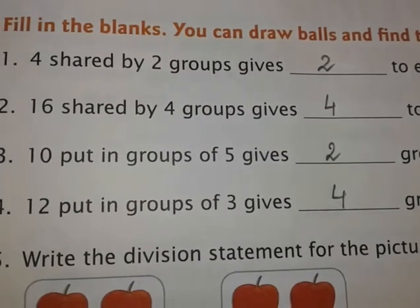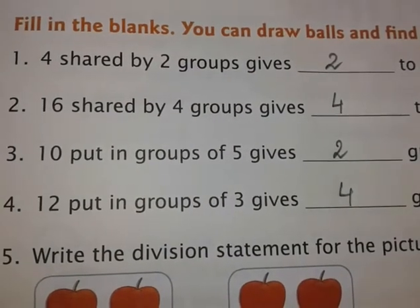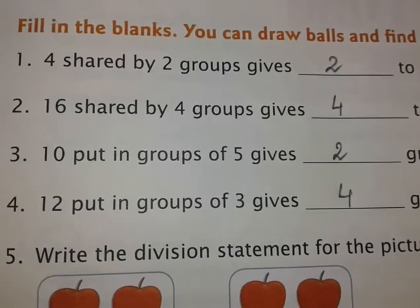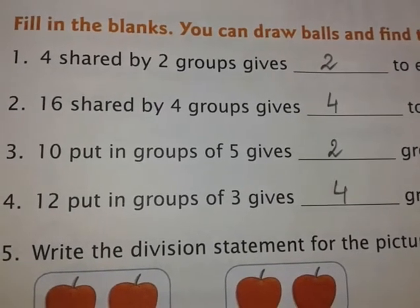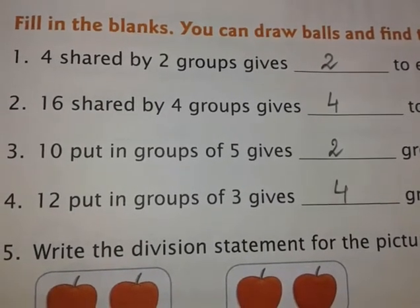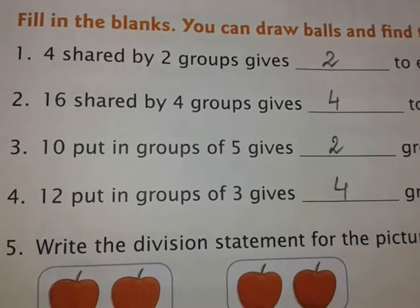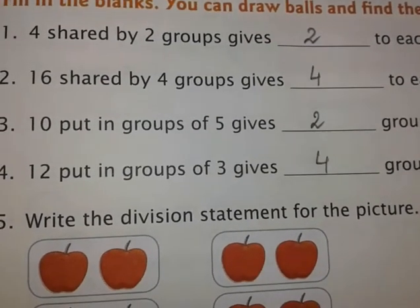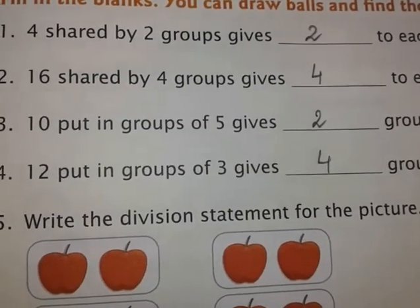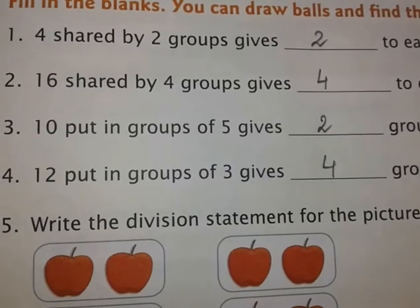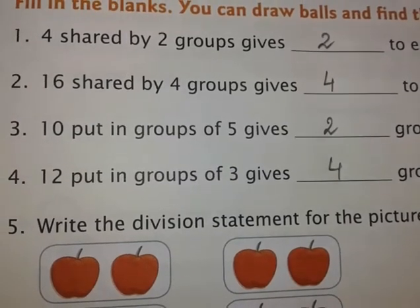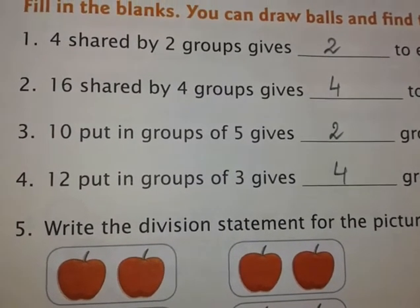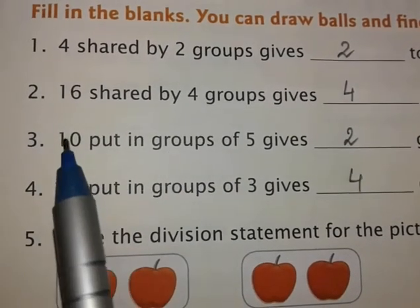Hello students, this is Worksheet 5 of Chapter 12 from your Oxford Advantage workbook. Yesterday I asked you to try doing this, and I hope all of you have done it correctly. Today I will explain the answers — how you have to do this. Please check your answers from here. The first one is asked.